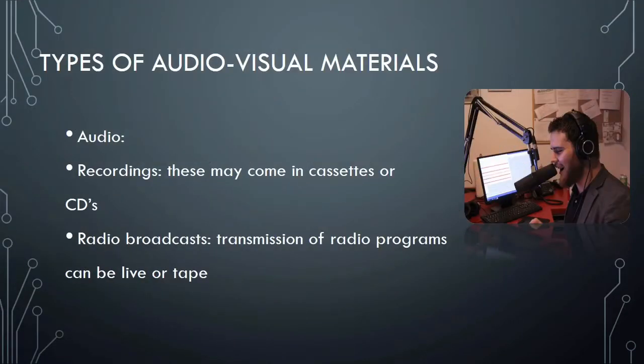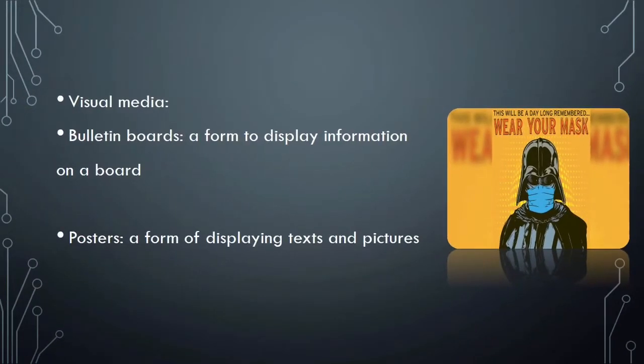Types of audio visual materials: Audio recordings may come in cassettes or CDs. Radio broadcasts involve the transmission of radio programs, which can be live or taped. Visual media includes bulletin boards, which are a form to display information on a board, and posters, which display text and pictures.